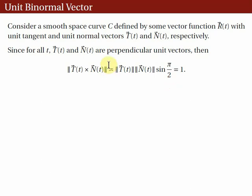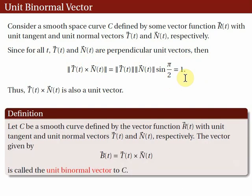This tells us that T × N is a unit vector. Furthermore, from a previous lecture, the cross product of two vectors is perpendicular to both vectors, so T × N is perpendicular to both T and N. We define the unit binormal vector: let c be a smooth curve defined by r(t) with unit tangent T and unit normal N. The vector B = T × N is called the unit binormal vector to c.